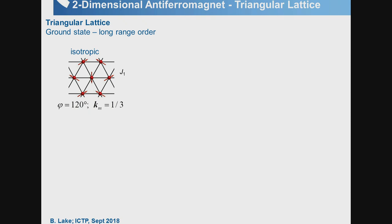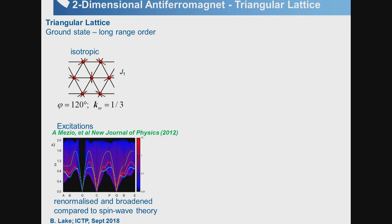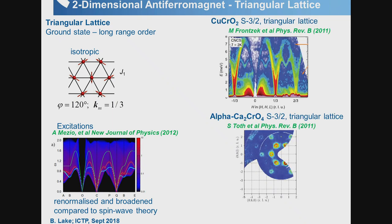The triangular lattice does develop long-range order with 120-degree type ordering. Theoretical predictions show spin wave theory works to a degree, but for spin-½ it becomes increasingly problematic at high energies where continuum scattering appears and there is also a renormalization of the energy scale. Nevertheless, you do see sharp excitations and sharp rings.